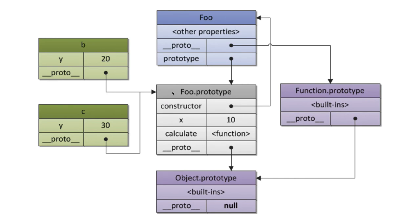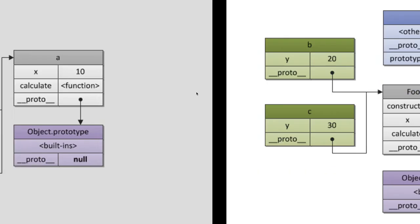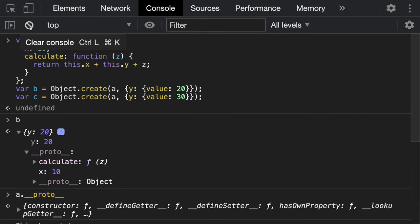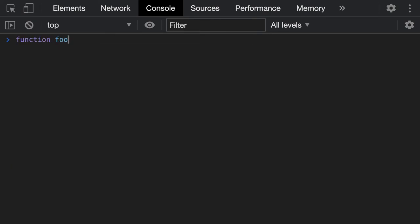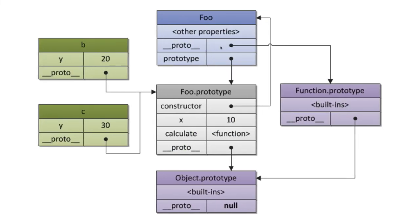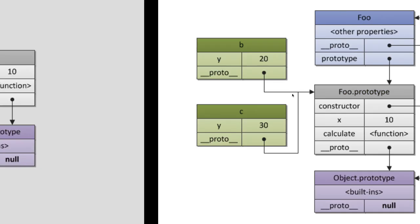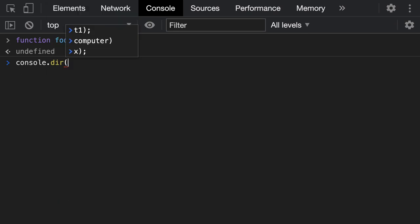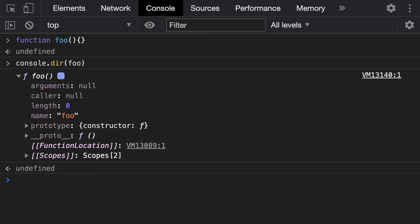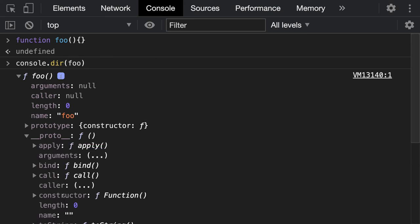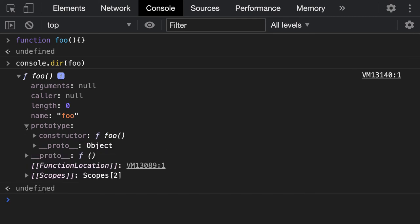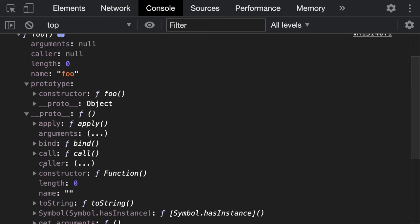Now extending this example with a function: we create object from function foo. The prototype of the foo function is foo.prototype. We have function foo, and foo's __proto__ is pointing to Function.prototype — capital F. Always remember: every function's __proto__ will point to Function.prototype, and a function's prototype will point to the constructor function. If I do console.dir on foo you can see the proto of this function is pointing to the capital F Function, and prototype is just the constructor function.